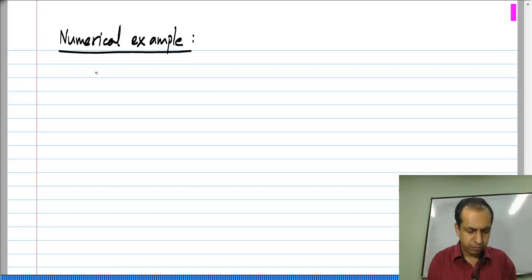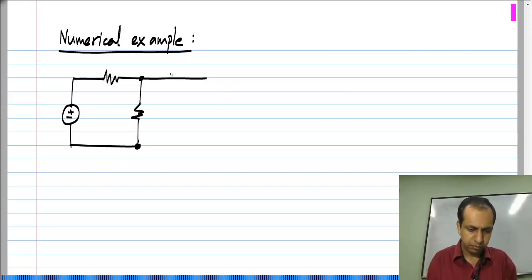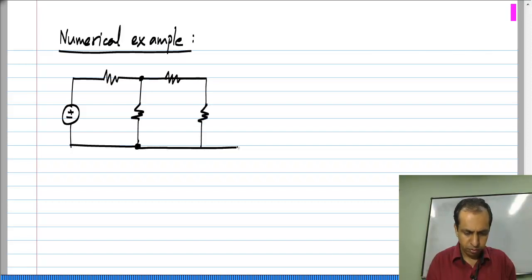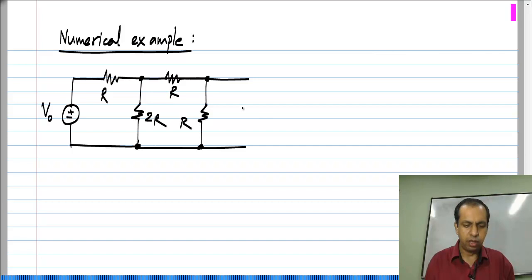Let me take an example. I will consider a simple circuit, but it can be anything. This is the circuit given to me, so let us say this is V naught and this is R, 2R, R and R, and I want to model it at these two terminals.